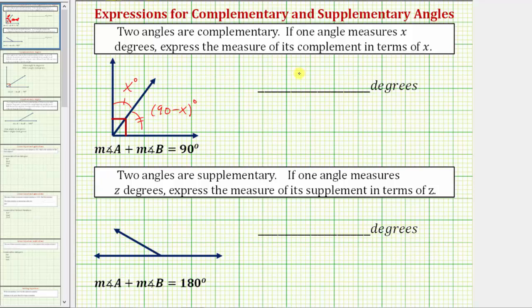So we enter 90 minus x. And just to check this: if x equals 40, this angle measures 40 degrees, and this angle measures 90 minus 40, or 50 degrees.